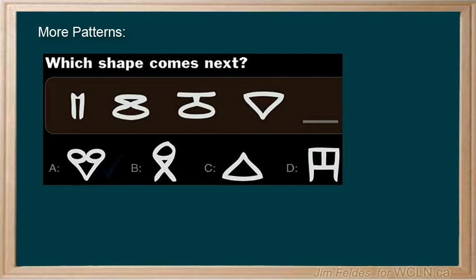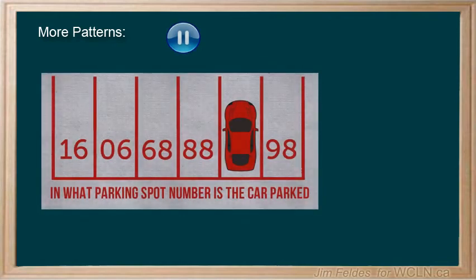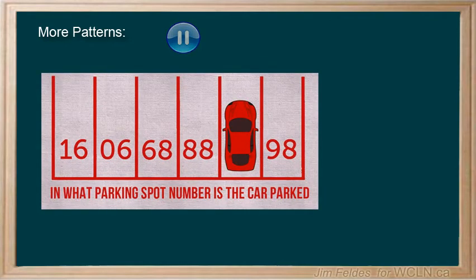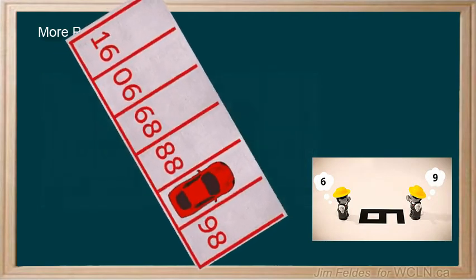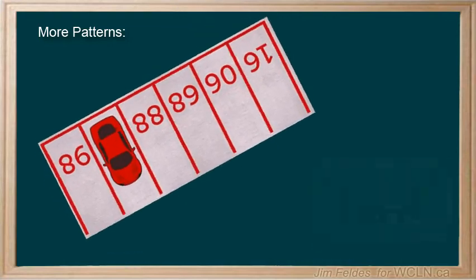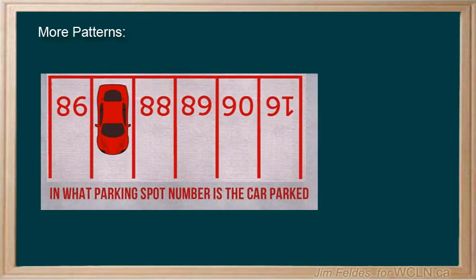Again, looking at things differently. Here's another on a similar theme. Here's a hint, think perspective. When the image is flipped, the pattern takes shape and we realize that the parking stall number is 87.